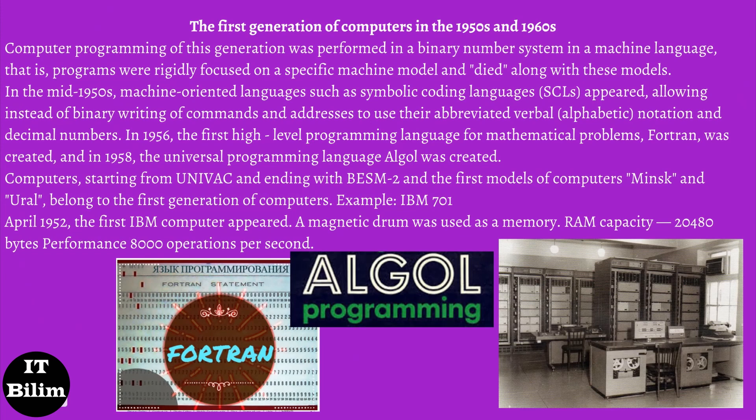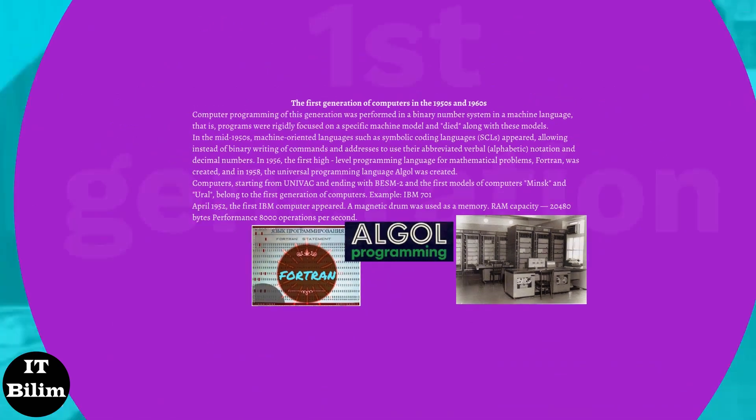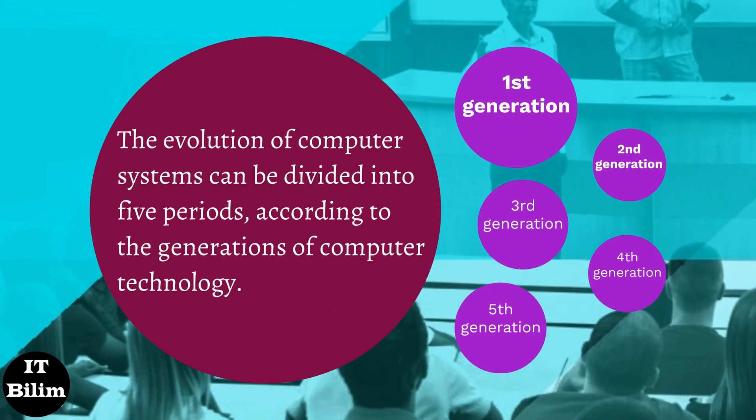Computers starting from UNIVAC and ending with BESM-2 and the first models of computers Minsk and URAL belong to the first generation of computers. Example: IBM-701. April 1952, the first IBM computer appeared. A magnetic drum was used as memory. RAM capacity: 20,480 bytes; performance: 8,000 operations per second.